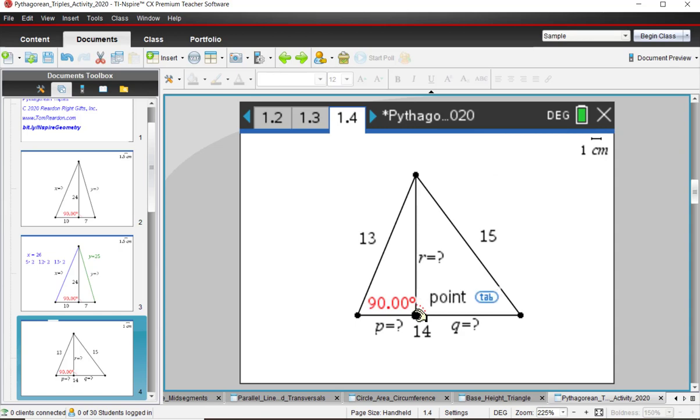Here we have another altitude drawn to this side right here. We're asked to find three lengths. We're told that this is 13, this whole side is 14, and this is 15. Press pause as needed, resume when ready.